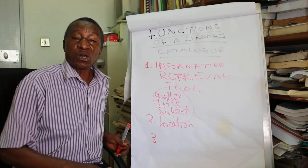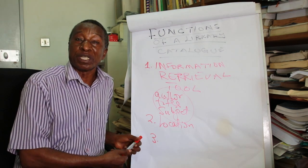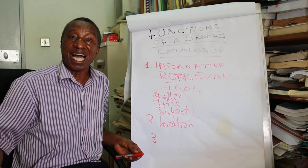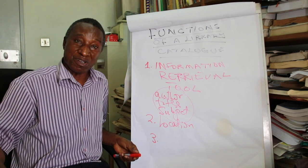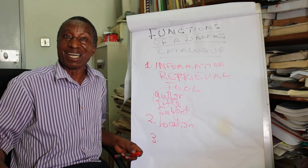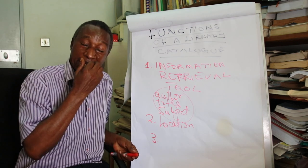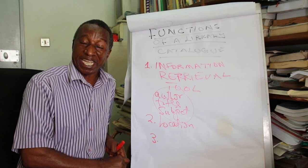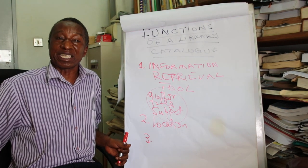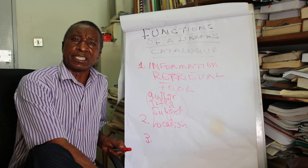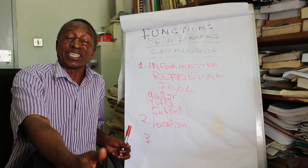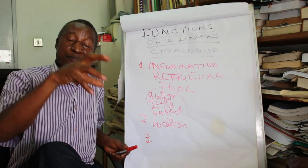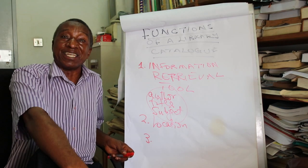The catalog is also useful for the management of stock — when doing weeding and stock taking. Without the catalog we cannot tell what is available in the library, whether materials are still available or have not been returned, or whether they have been stolen or lost. The catalog helps in stock taking and in weeding, which is the removal of materials that are outdated or obsolete. The catalog is very important to library management in collection development and in the management of stock.